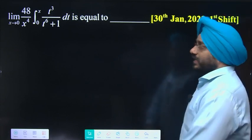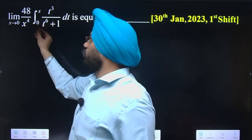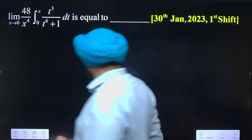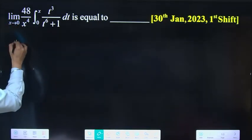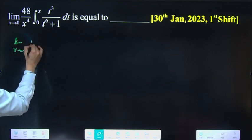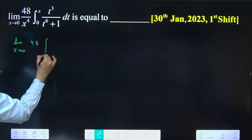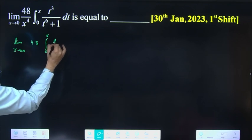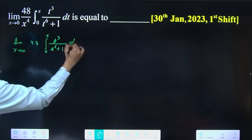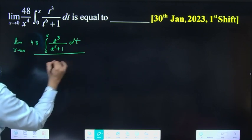The question is: limit as x approaches 0 of 48/x^4 times the integral from 0 to x of t^3/(t^6 + 1) dt.